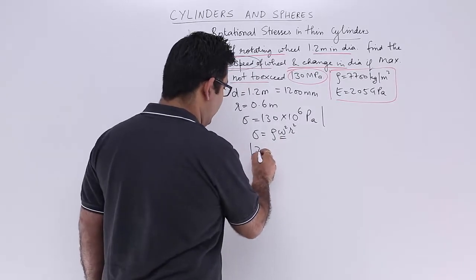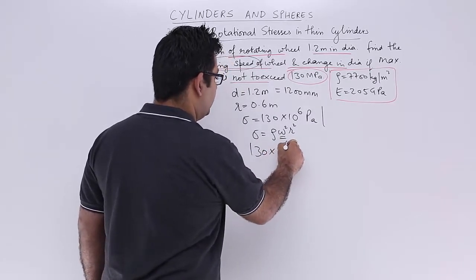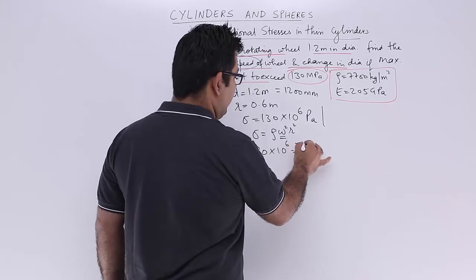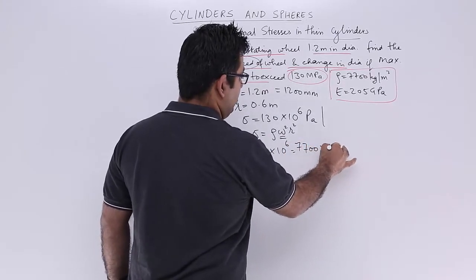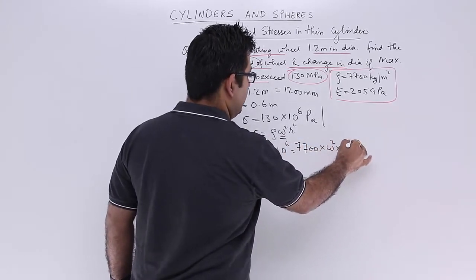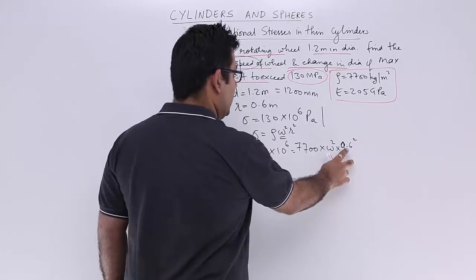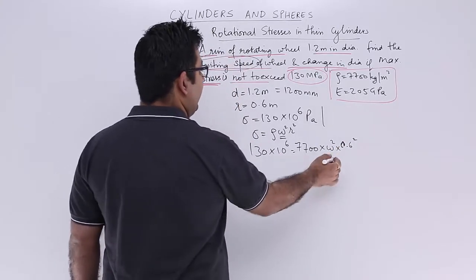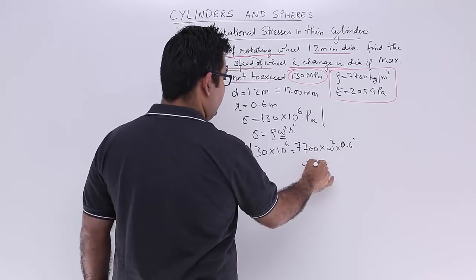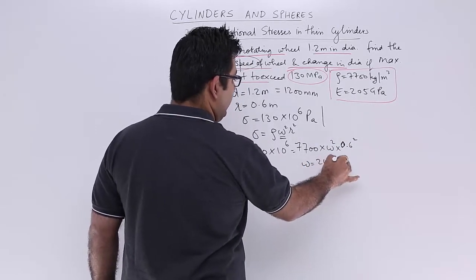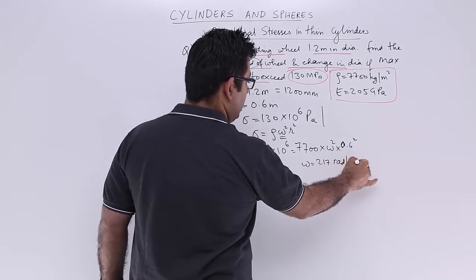So this becomes 130×10^6 = 7700×ω²×(0.6)². From here you can easily find out the value of omega, which would be approximately 217 radians per second.